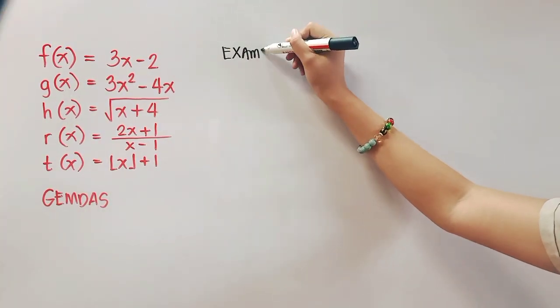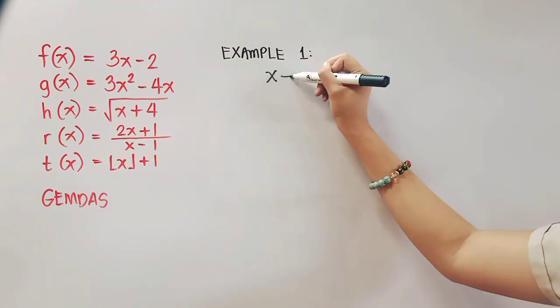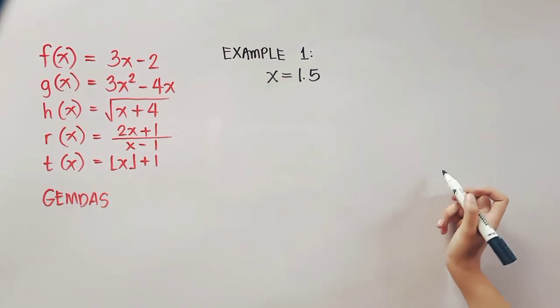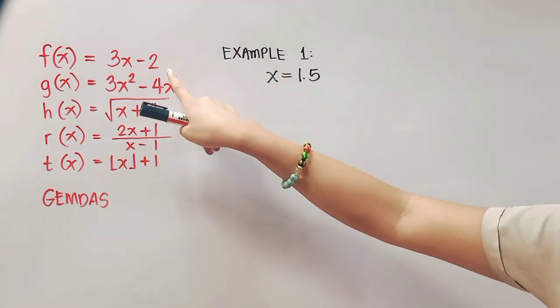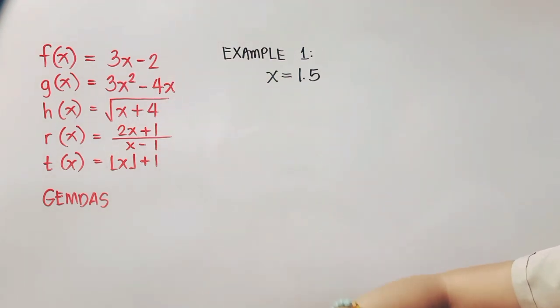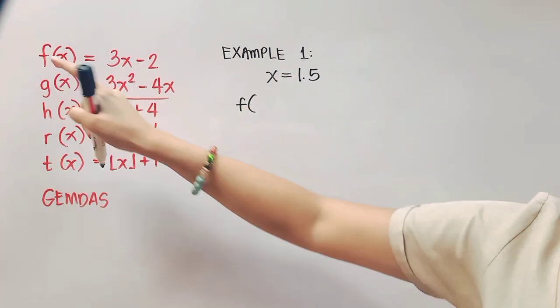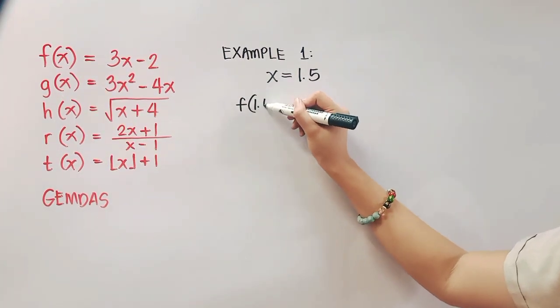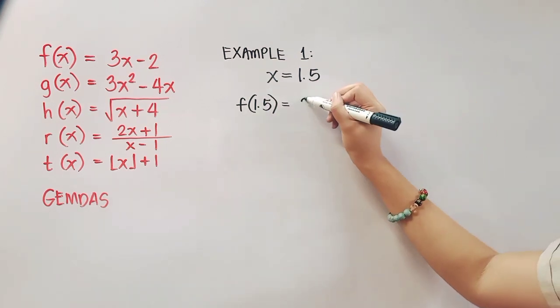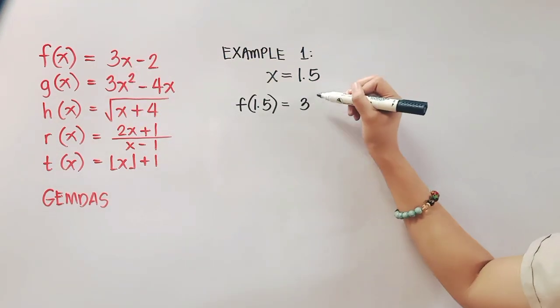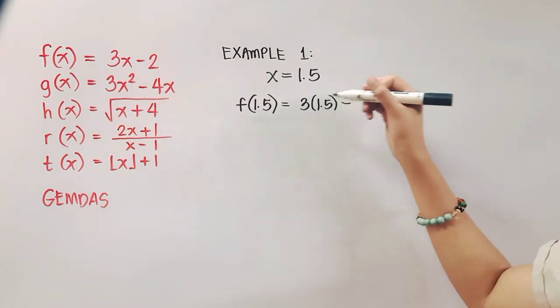Let us start with example 1. Let the value of x be equal to 1.5. Evaluating functions is simply substituting a given value to the given functions. Let's start with getting f of x. x is now 1.5.